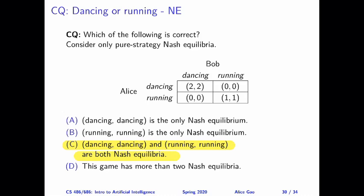So in this case, is there any way to formalize our intuition? Is there any way to compare different Nash equilibria and say maybe one of them is better than the others? It turns out we can use the concept called Pareto dominance and Pareto optimality to compare different outcomes of a game.